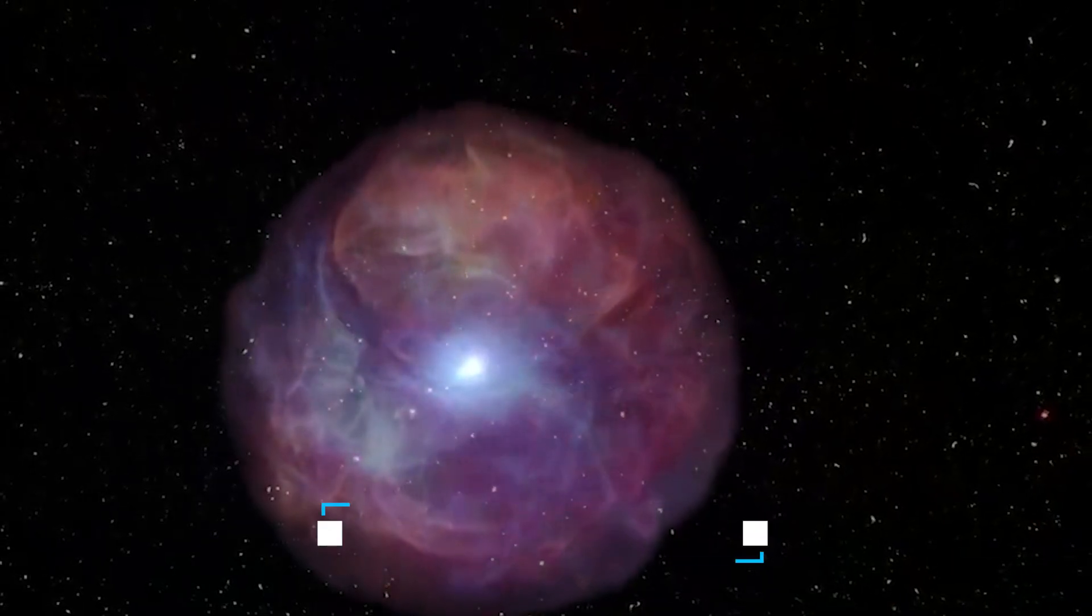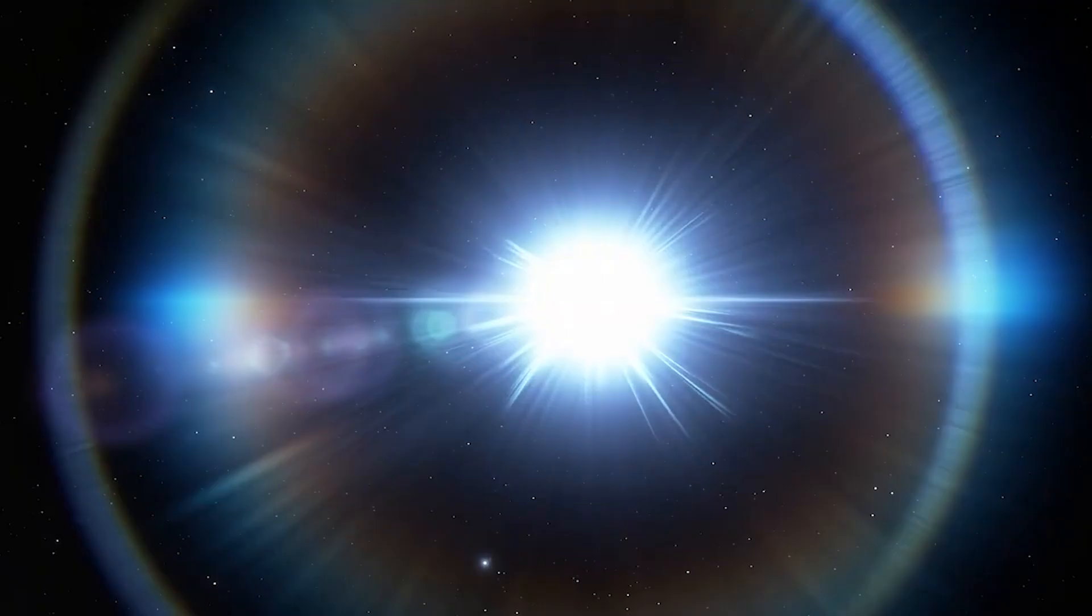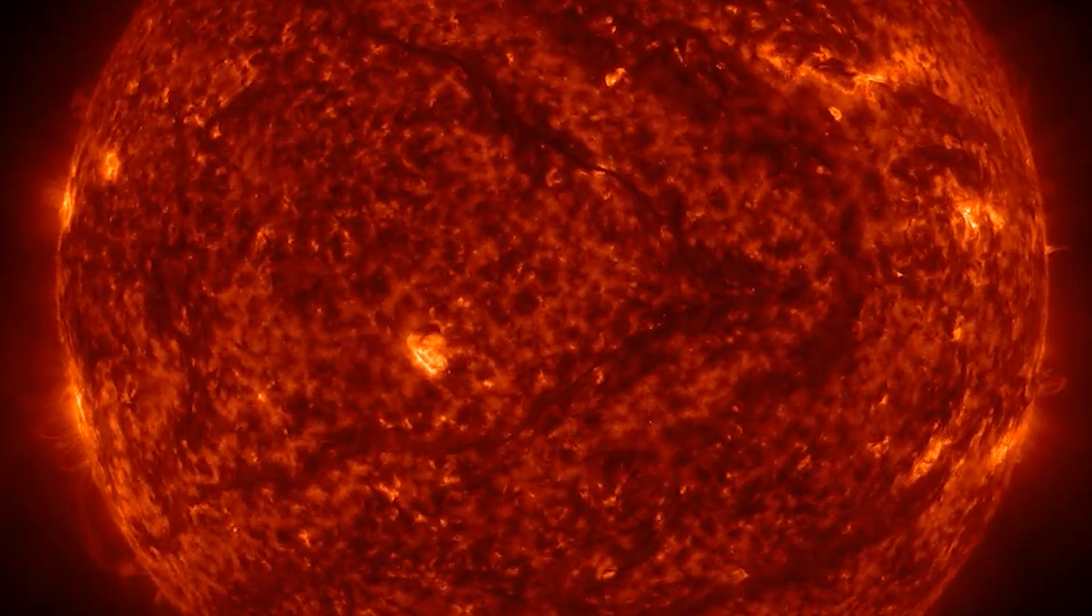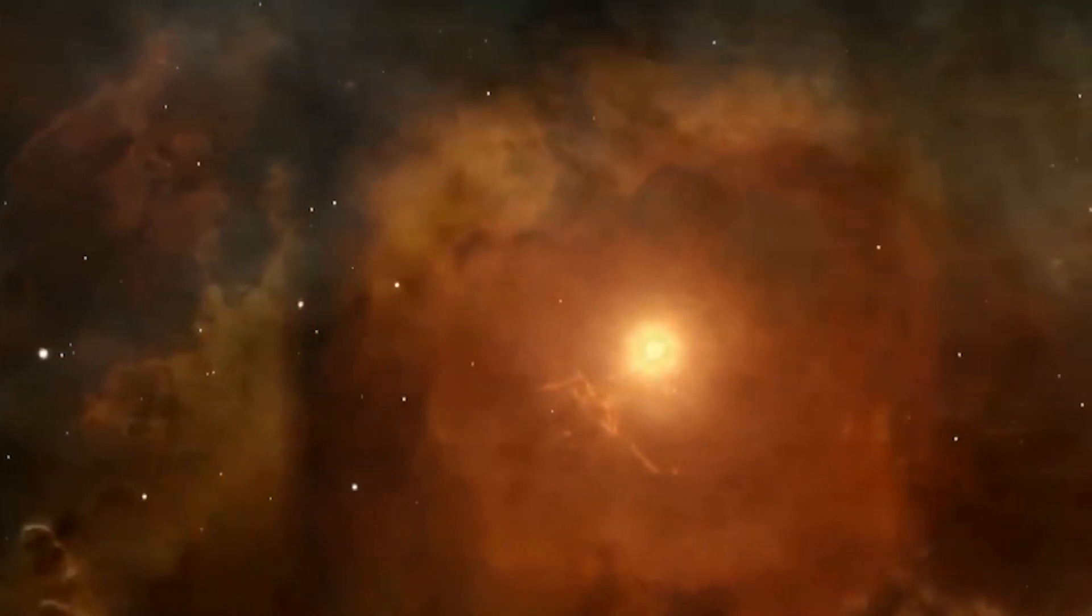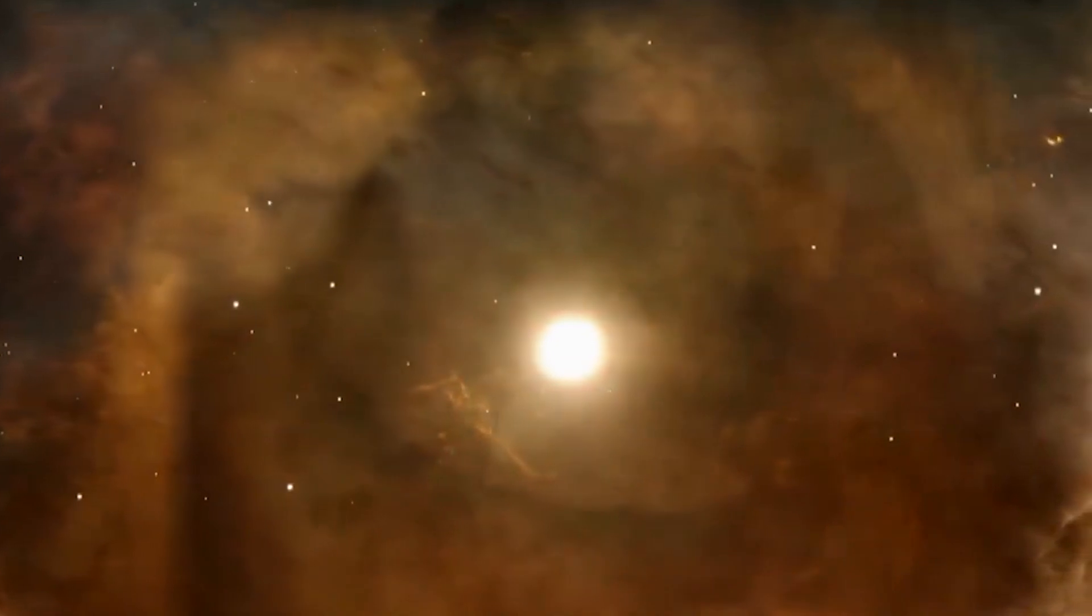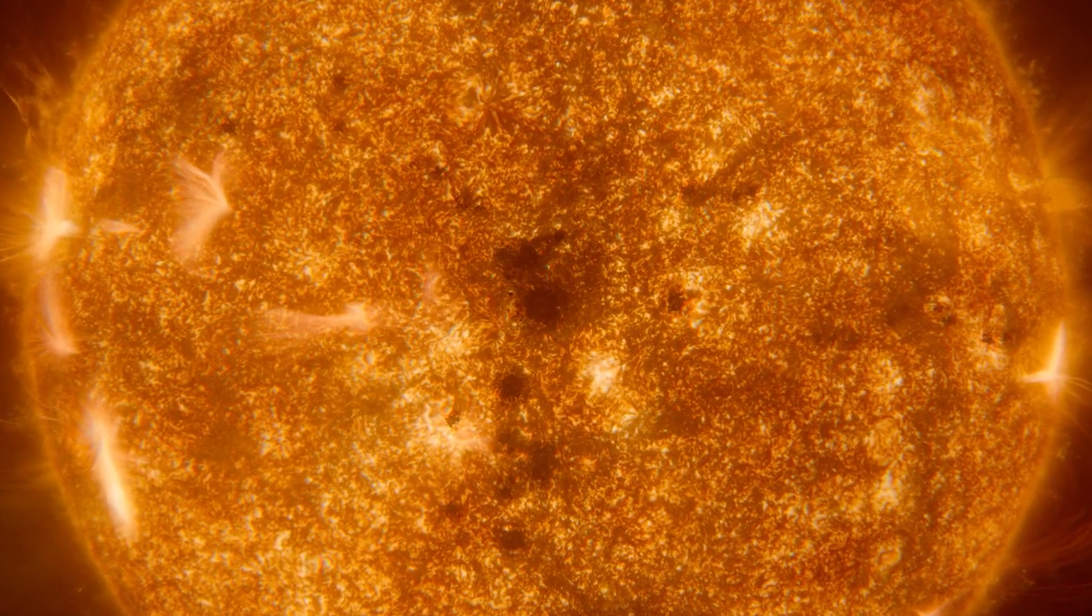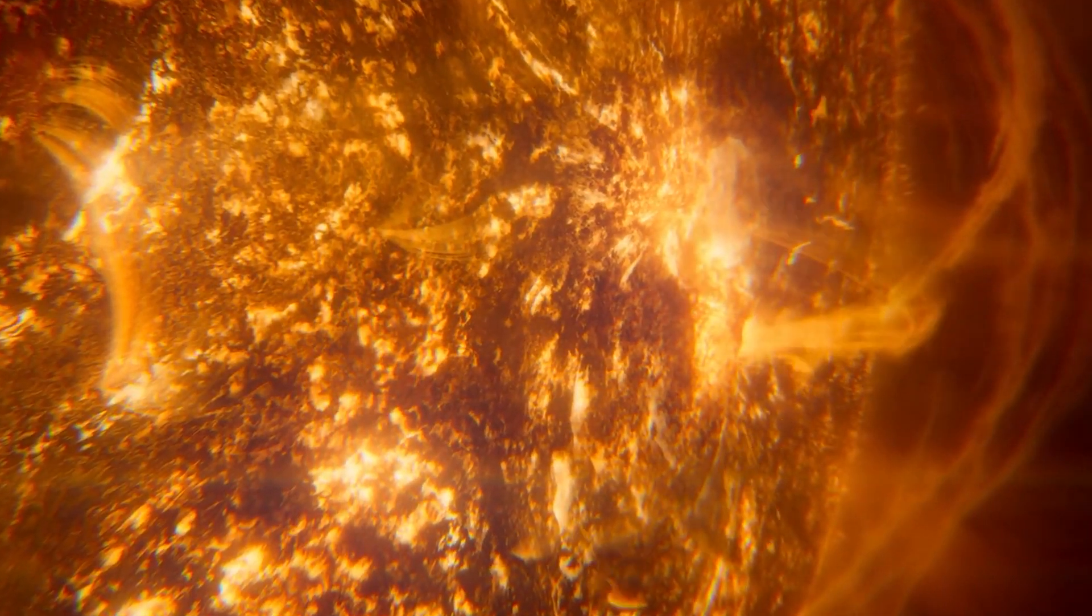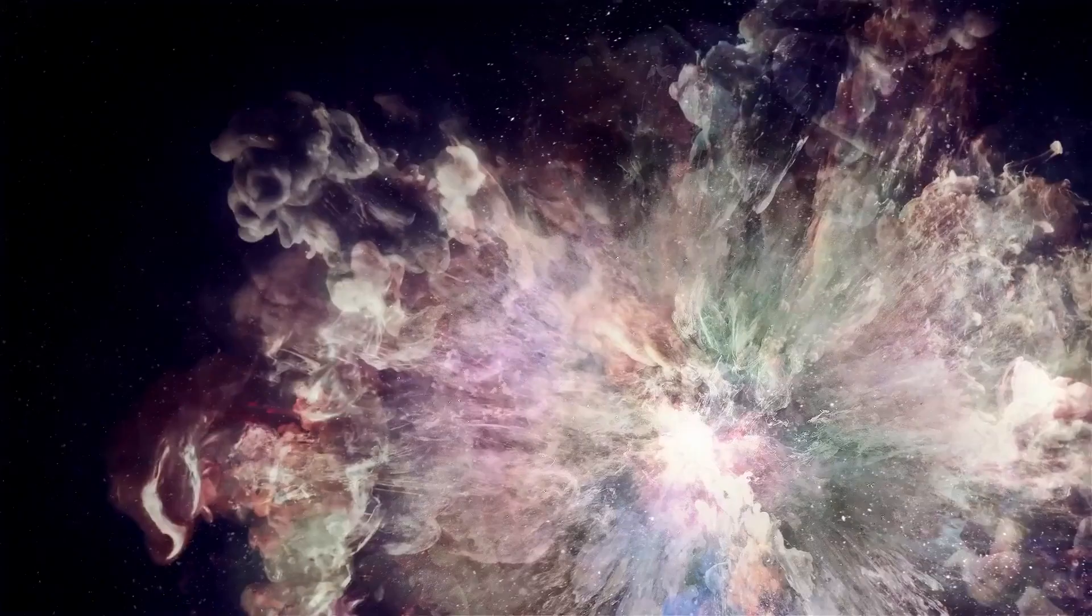The second type of supernova, known as type 2, follows a similar process. However, instead of involving a white dwarf, it features a massive star that's at least 5 times more massive than the sun toward the end of its life. These massive stars are still shining brightly due to the heat generated by fusion processes. Yet, just like in type 1a supernovae, a time comes when this balance collapses. In this case, it's because the star runs out of fuel. Without the additional energy from fusion, which was keeping the star's mass from collapsing under its own weight, electron degeneracy pressure alone can't counteract the star's gravitational forces.